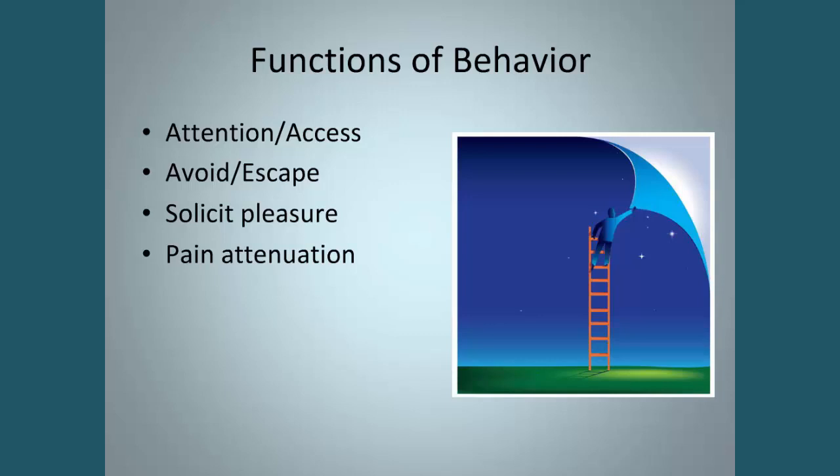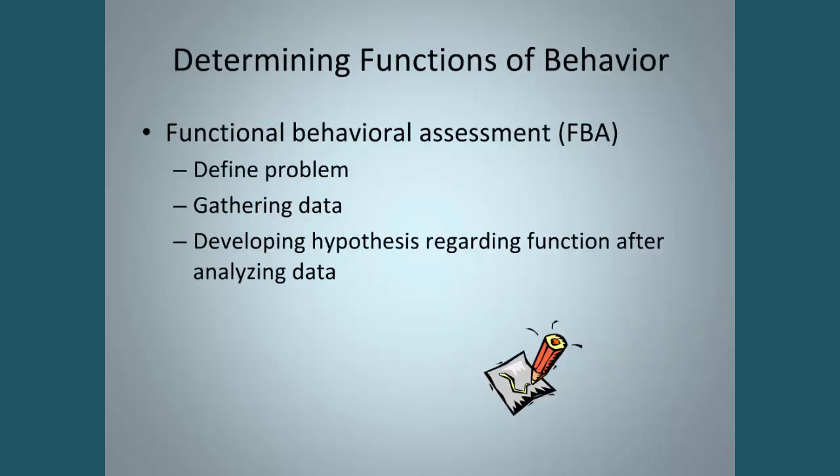Behavior can also function to solicit something that gives them pleasure, or just solicit pleasure from another human being. Or it can be pain attenuation — if something is very loud and very unpleasant, maybe the behavior is to stop that. So the first thing on your plate is to determine the function of the behavior. One assessment that helps you do that is called a functional behavioral assessment, or FBA. I really recommend that you get well-trained to do FBAs and work with a behavior specialist or psychologist who is well-trained in functional behavioral assessment. Because coming up with a faulty hypothesis means you'll intervene in a way that really won't meet the needs of the child, since you're not addressing the right function.